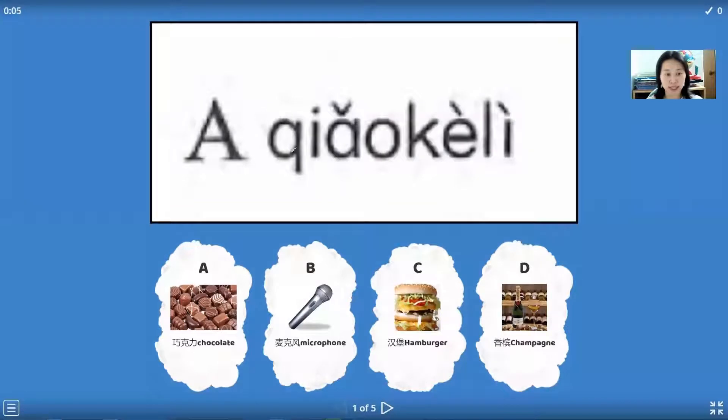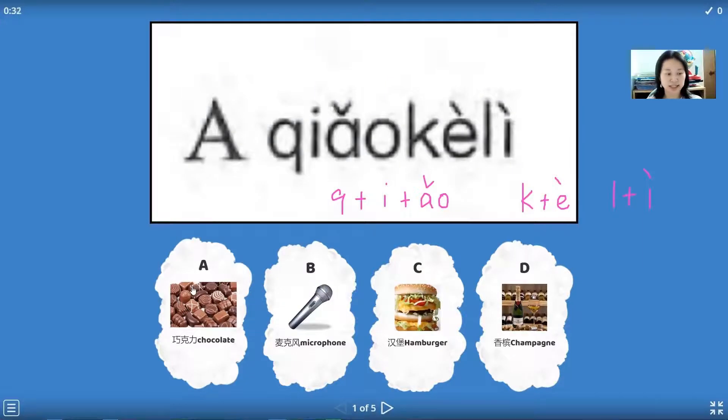The first one we see: qi yi ao, qiao. Qi yi ao, qiao. Ke ee, ke. Le yi, li. And this word we say qiao ke li, qiaokeli. Okay, we just find the correct answer. Chocolate is chocolate, qiaokeli.